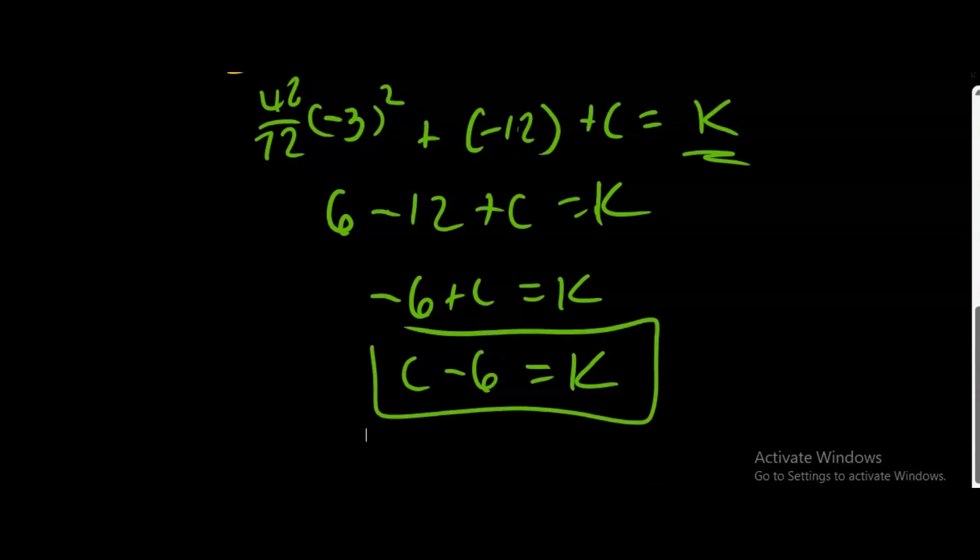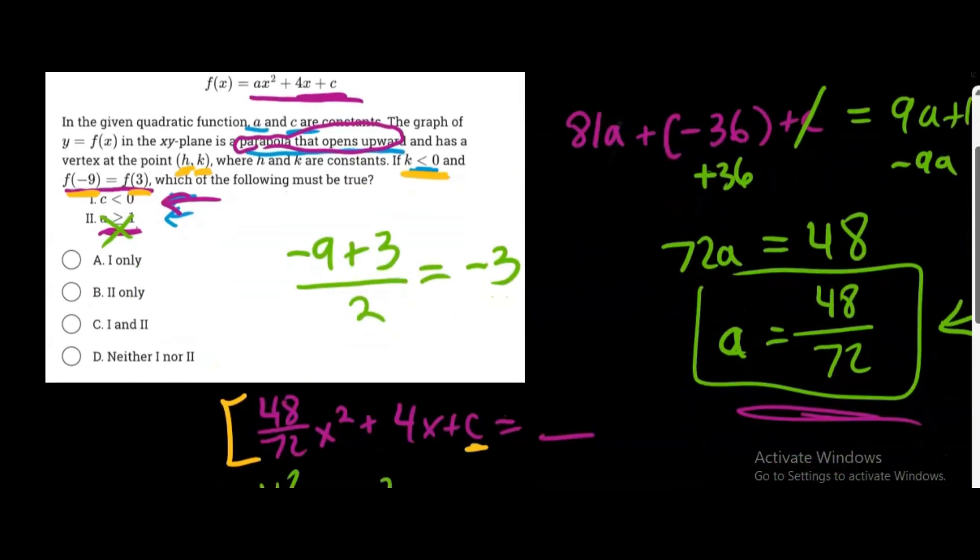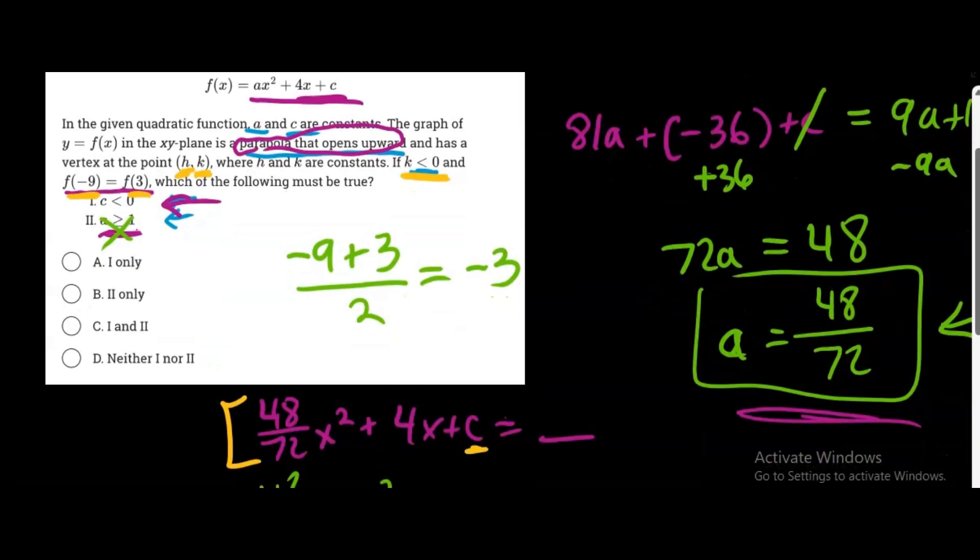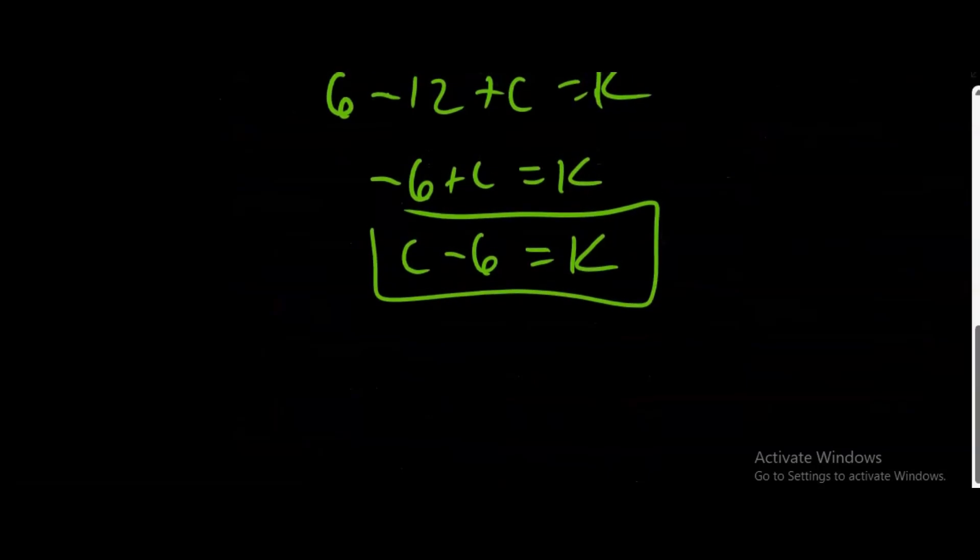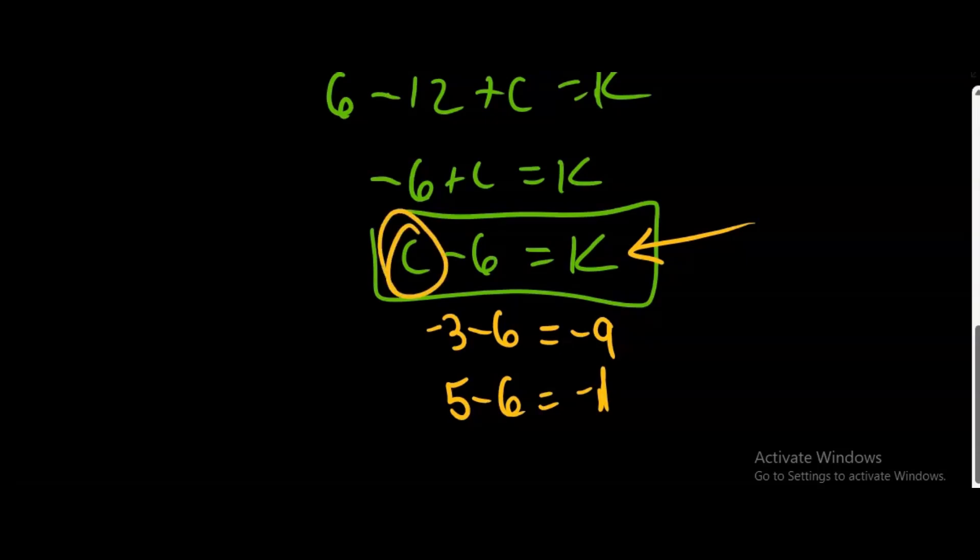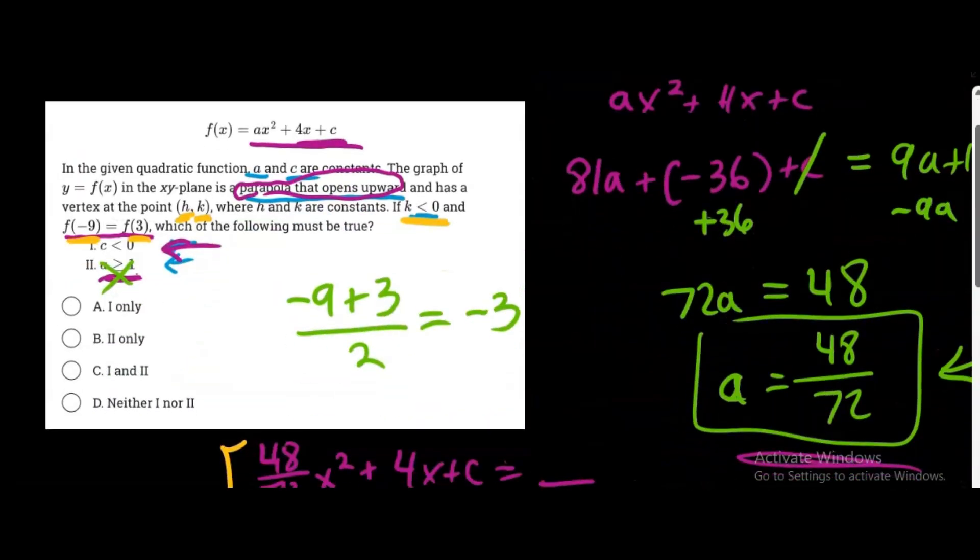So let's see what the clause says. So it says the restriction is that c has to be a negative number. Now, is that true? Well, if we were to plug in a negative number for c, let's say I pick at random, like negative 3. Negative 3 minus 6 equals negative 9. Well, negative 9 is a negative number, and we know k has to be a negative number. However, if we plugged in a positive value for c, would this equation work? Well, if we plugged in, let's say, 5, 5 minus 6 is negative 1. Well, now, c is a positive number, and we still got a negative k, which means that the first clause right here is not true.